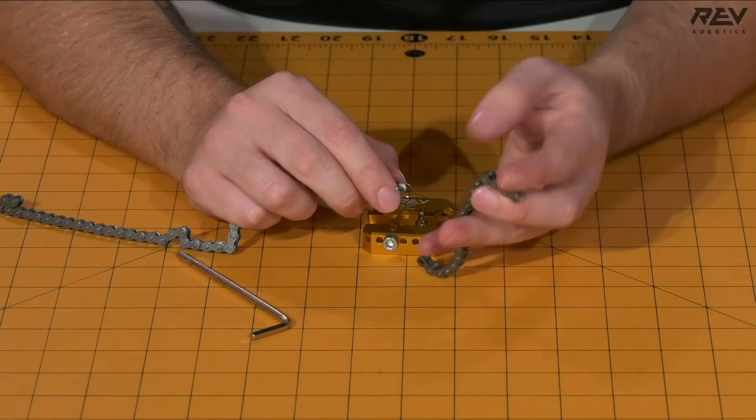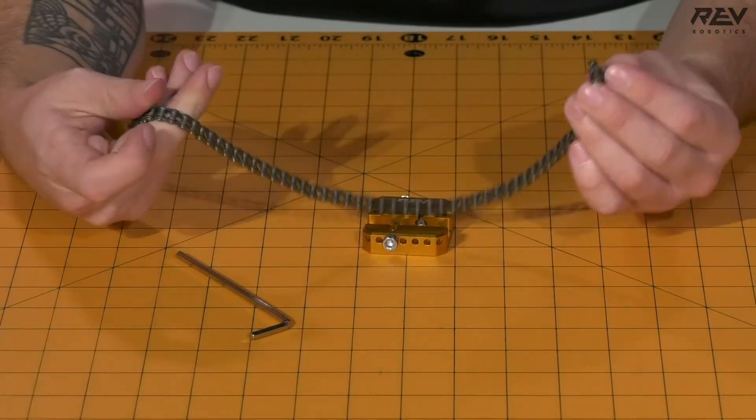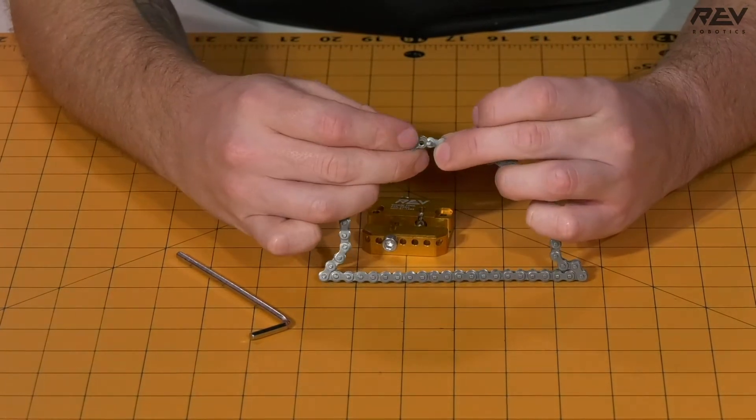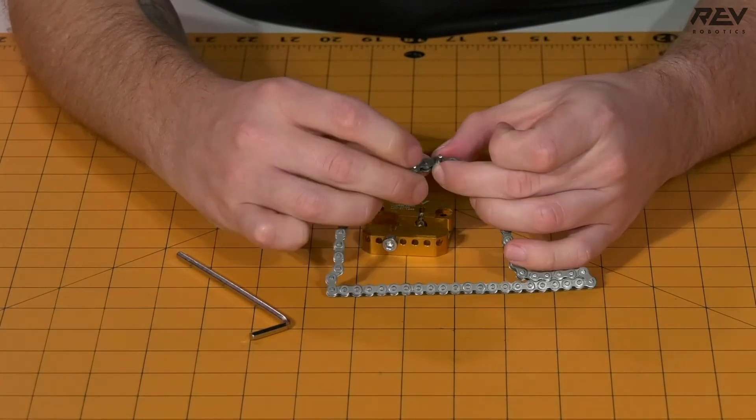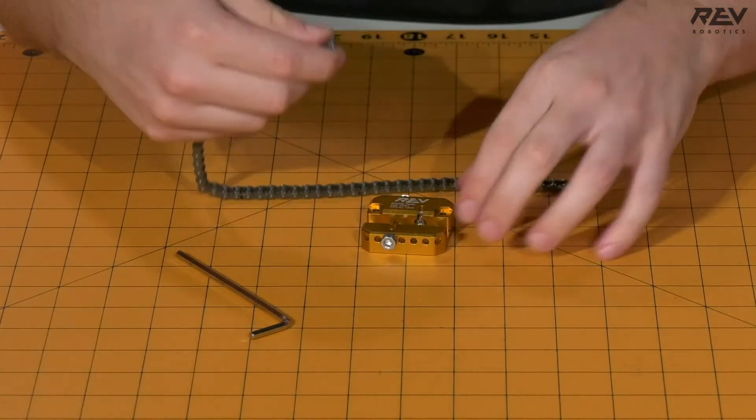Once the chain ends up breaking away, you're going to want to remove that chain and push that to the side. Now you have your pin removed and you need to reset the pin. So you need to realign these bushings together and end up seating this back into the chain tool itself.